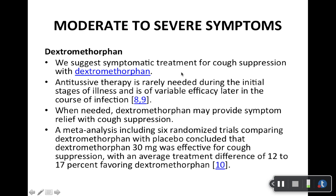Dextromethorphan is an antitussive — it helps with a persistent cough. It's rarely needed, so prescribe it on a PRN (as-needed) basis only if your patient is really complaining about the cough. As for adverse effects, it can cause some sedation. So advise patients not to operate heavy machinery, and it may be better taken at nighttime. NyQuil is one product that contains dextromethorphan. Always check the label on over-the-counter preparations like Robitussin, as they make many different products within the brand.